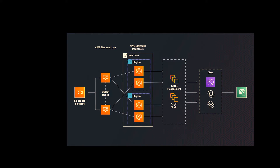The first example uses the cloud for origination but still uses more of an on-premises system for encoding. You've got the camera feeding into two encoders. Elemental has a nice feature where you can have multiple encoders producing identical outputs — they call it output locking — which lets you reference another encoder so that both are producing identical output. In this scenario, you're skipping the mezzanine encode step because the on-premises encoders are potentially producing your ABR stack and packaging it to HLS. You can then deliver that to the origin service, MediaStore.